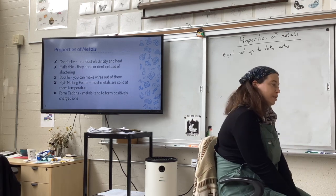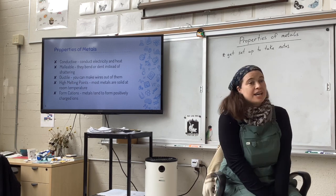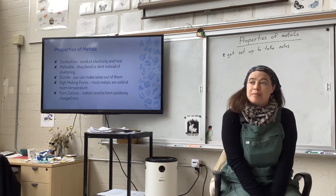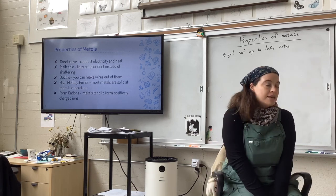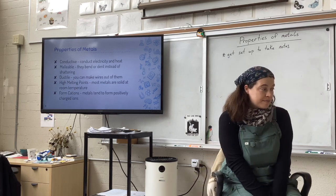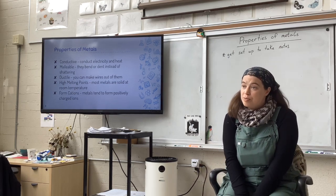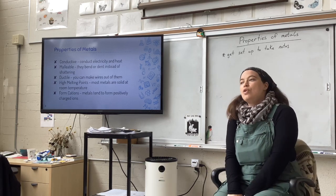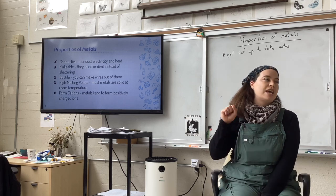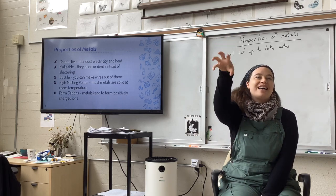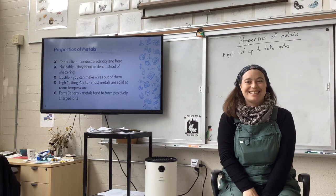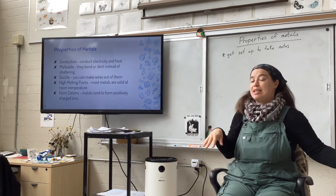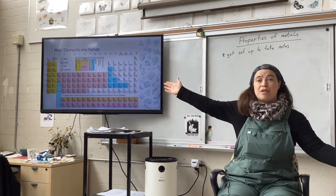Metals are malleable and ductile. Malleable means they flatten rather than shattering. Ductile means we can make wires out of them. They tend to have high melting points, which means they tend to be solids at room temperature — though there are always exceptions. And metals tend to form positive cations.